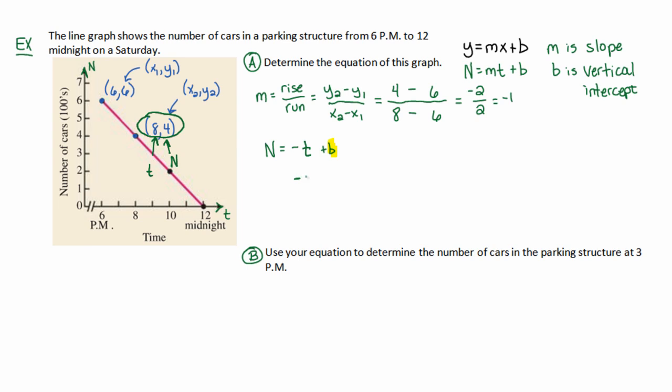So, I'll let t equal 8, and I'll let n equal 4, and this allows me to solve for b. I'll just add 8 to both sides. And I get that b is equal to 12. And that's because negative 8 plus 8 cancels. 4 plus 8 is 12. So, not only do I have my equation is n equals a negative t, but now we know it's plus 12. So, that is my equation for the situation. And the number of cars is equal to negative t plus 12.